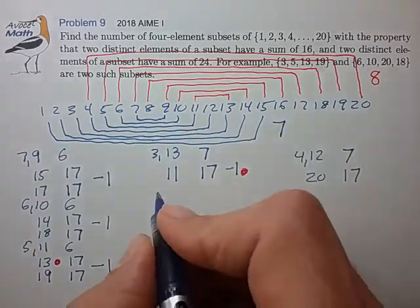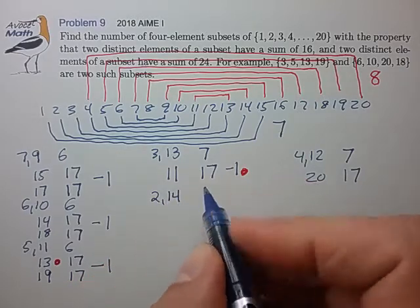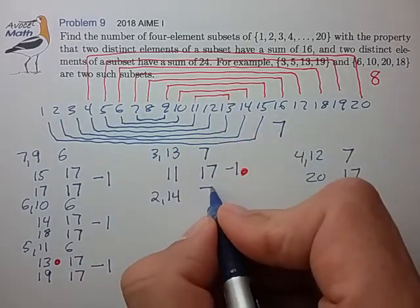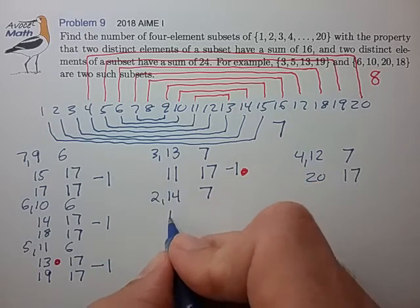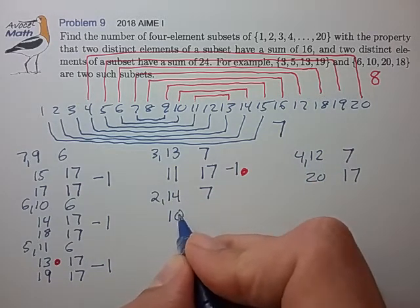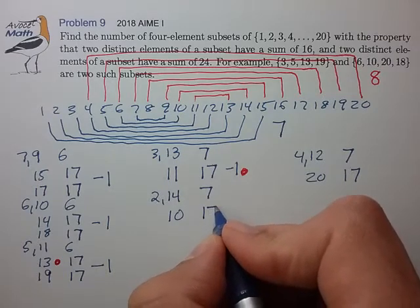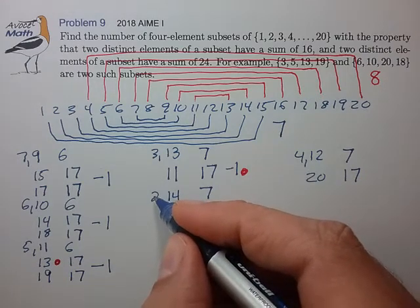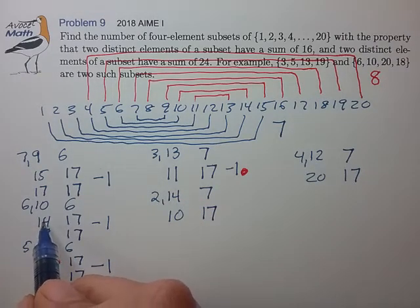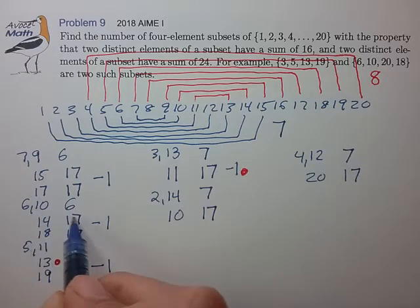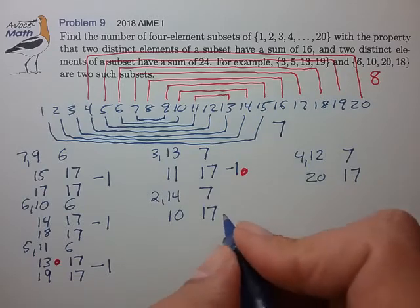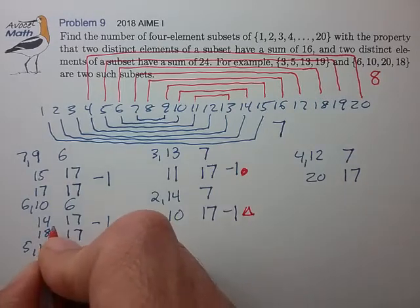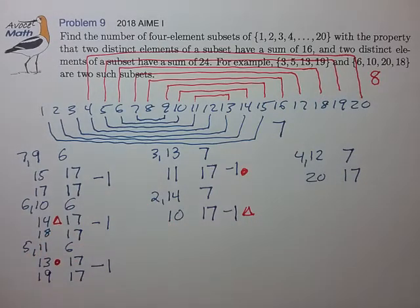Okay, the next blue pair is 2, 14. If the red pairs don't overlap, there are 7 ways that can occur. If they do overlap, then that overlap element would have to be the number 10. There are 17 ways that we can choose the fourth element. But here again, the 10, 14, 2 would double count one of the elements that occurred in the 6, 10, 14 that we counted here. So let's put a negative 1 to correct for that double count. Just make a little notation here to indicate the case that we're correcting for.